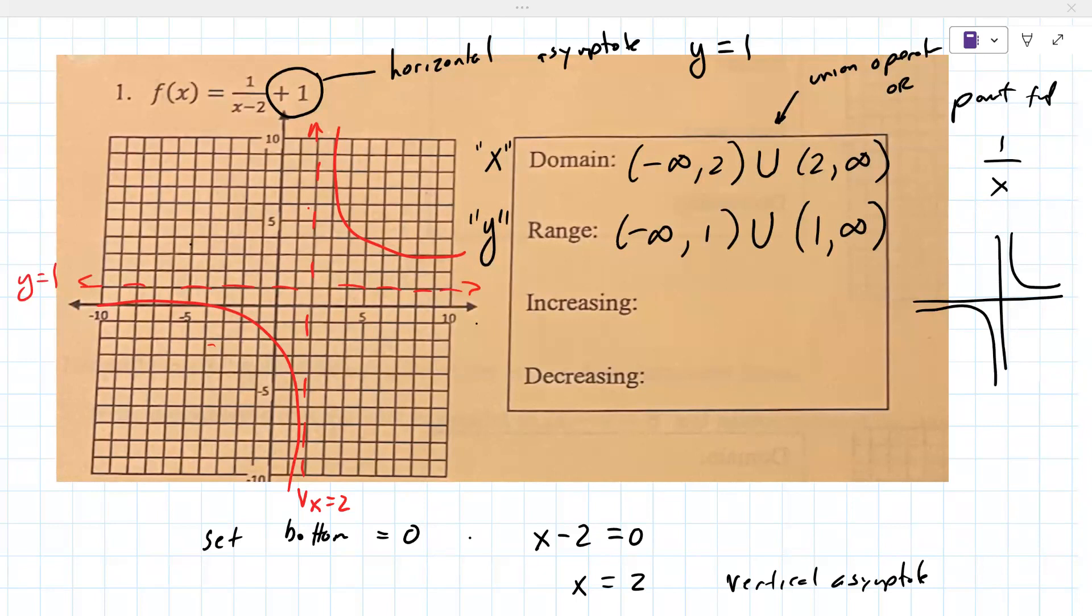Unfortunately everything we're doing only applies to this problem. It's not like you're getting a bunch of these that you can do. The next one is totally different. The only thing that might apply here is increasing means it's going up and to the right. Decreasing is down and to the right. Does it ever go up and to the right? No.